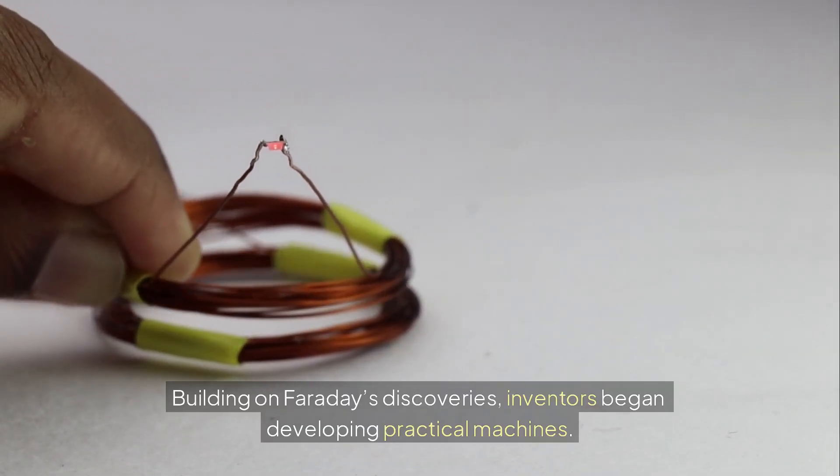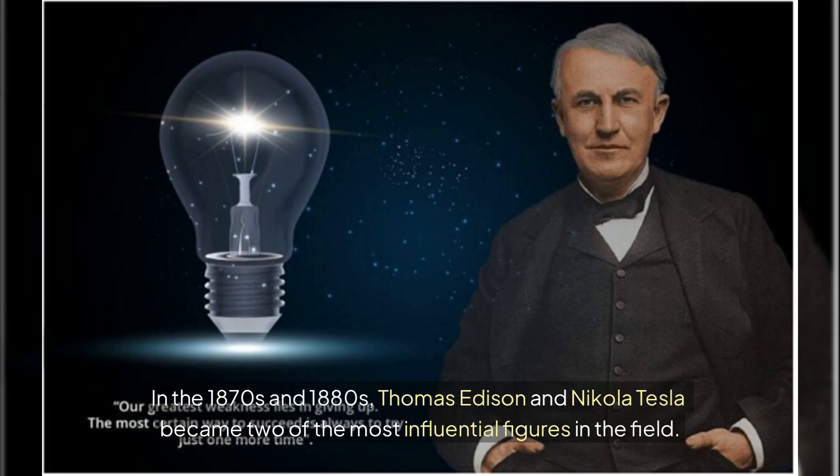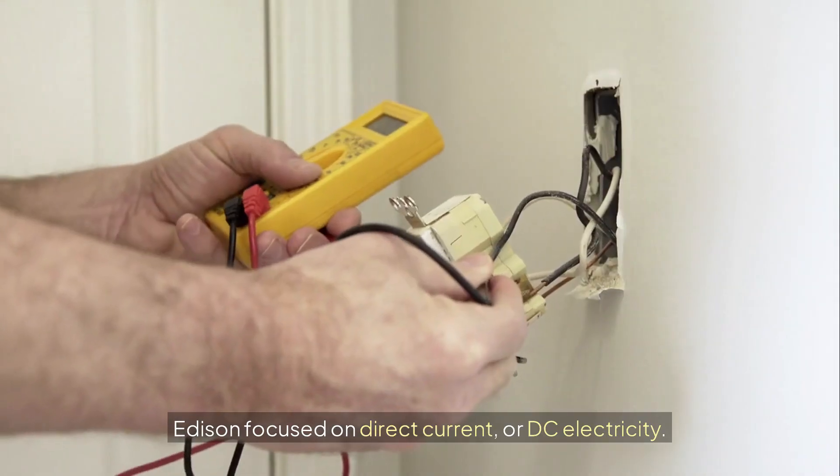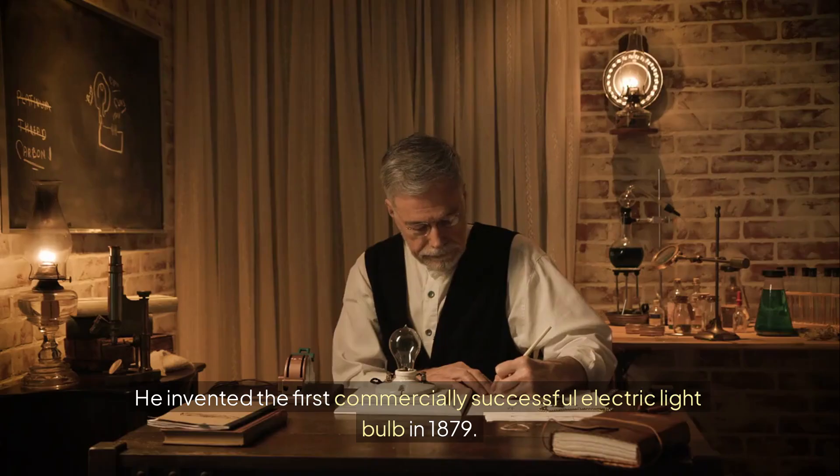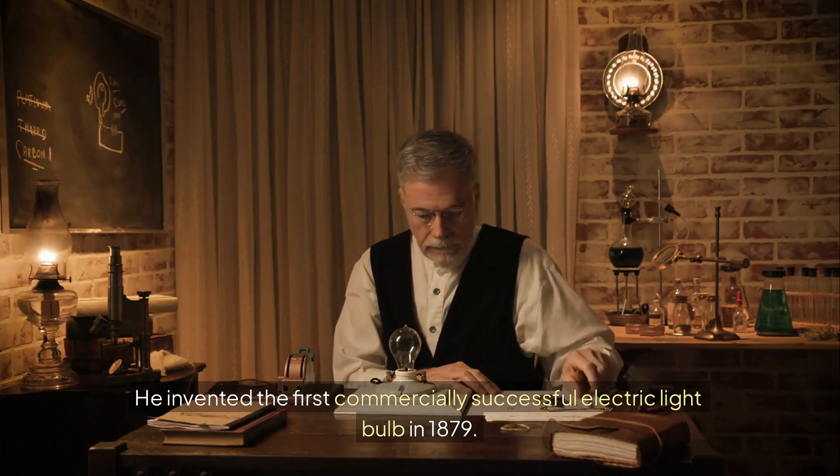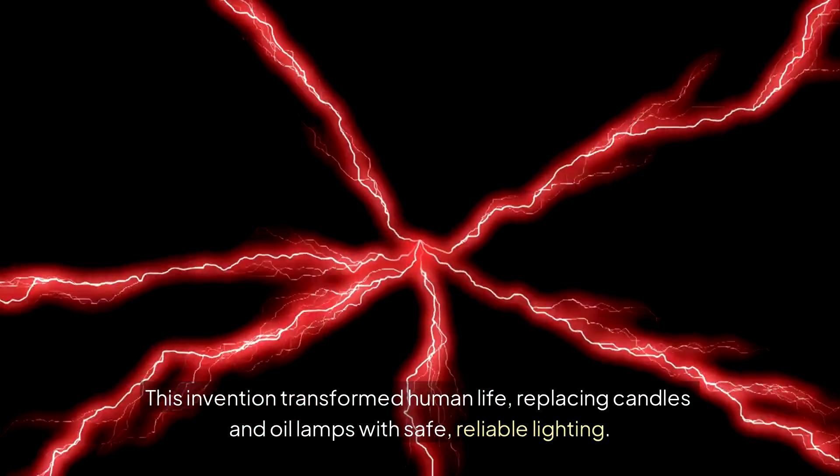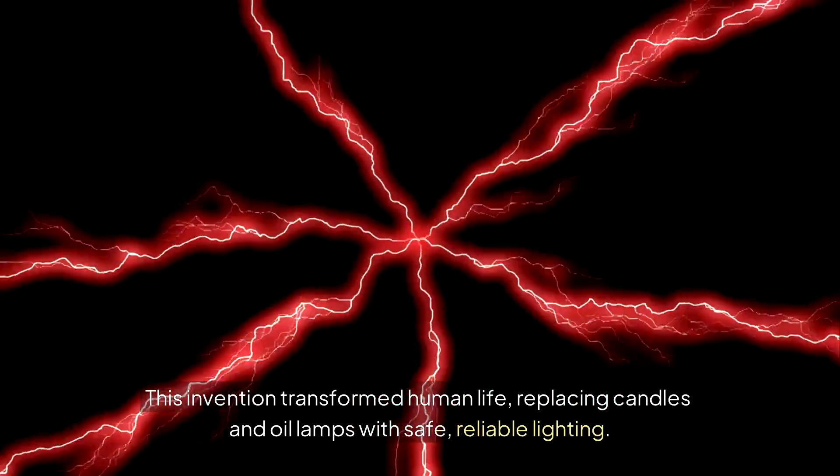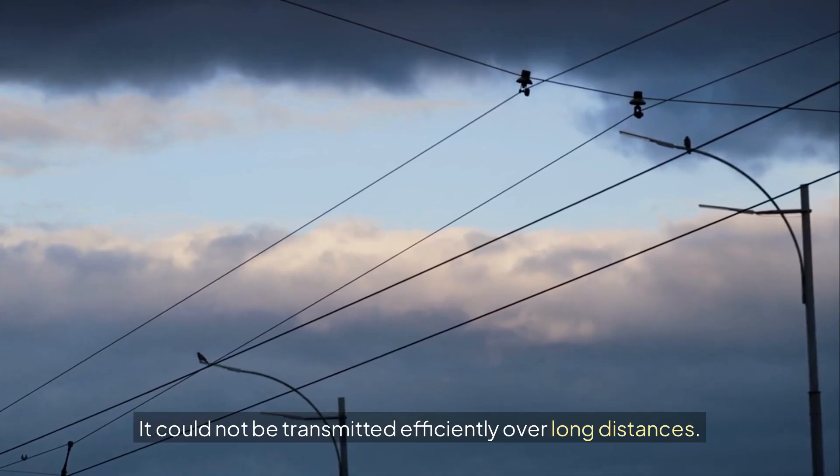Building on Faraday's discoveries, inventors began developing practical machines. In the 1870s and 1880s, Thomas Edison and Nikola Tesla became two of the most influential figures in the field. Edison focused on direct current, or DC electricity. He invented the first commercially successful electric light bulb in 1879. This invention transformed human life, replacing candles and oil lamps with safe, reliable lighting. However, Edison's direct current had limitations. It could not be transmitted efficiently over long distances.